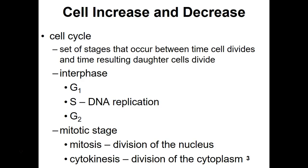We then move into the mitotic phase. Mitosis is division of the nucleus. In this phase, we divide the DNA equally, the nucleus disintegrates, and we produce two nuclei — one with 46 chromosomes and the other with the other 46 chromosomes. Then cytokinesis occurs, which divides the cytoplasm. At the end of the mitotic stage, we have two identical daughter cells matching the original parent cell.